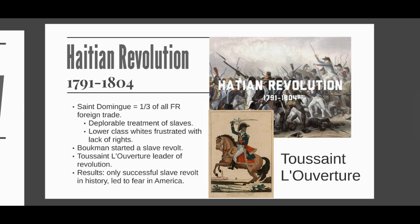In 1792, just one year later, the French government sent an army to restore order. Because one third of their economy came from the plantations in Haiti, it was in their dire interest to stabilize the region. The slaves were very successful in their revolt thus far, and if they won, France would lose that plantation economy making up a third of their trade revenue. Just as the French army arrived to settle things down, a new commander emerged over the slave revolt.